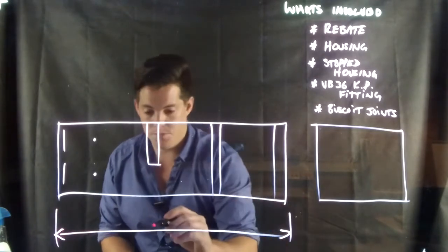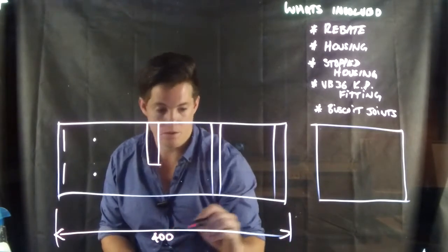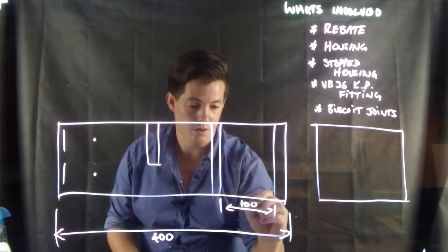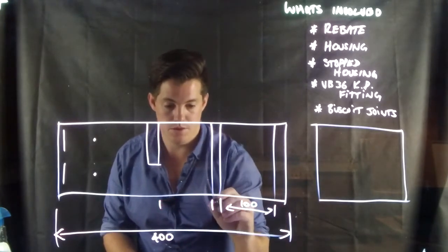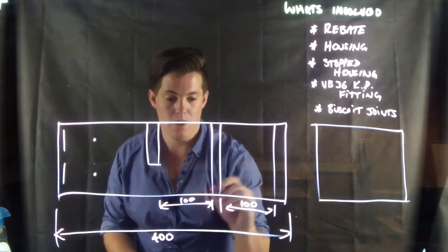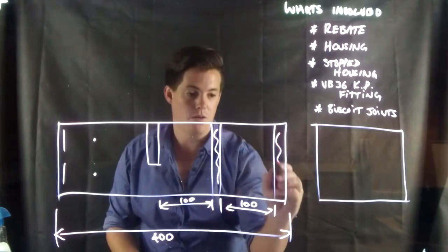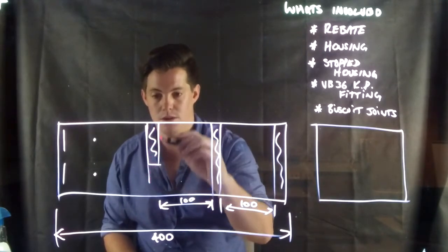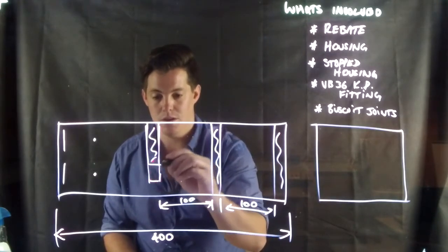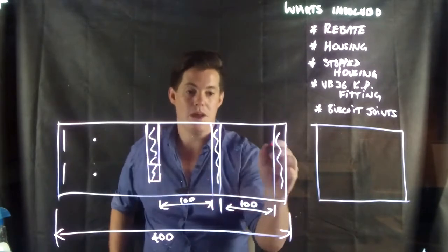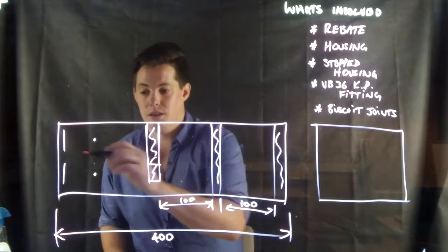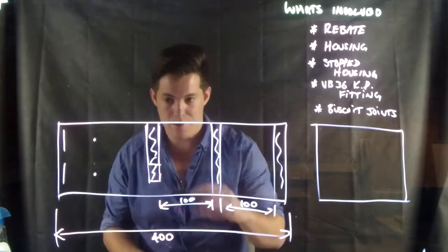So the overall measurement of that is 400 millimeters. Between each joint is 100. So those two there, there's a hundred mil gap. Now I'm not specifying what this gap is. I'll tell you what the board we're going to use is, but you should be able to work out what the gaps are for the jointing.